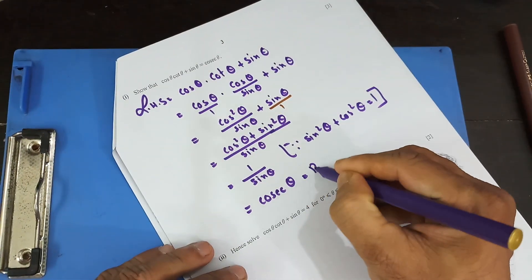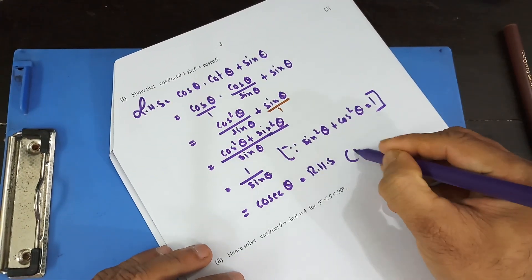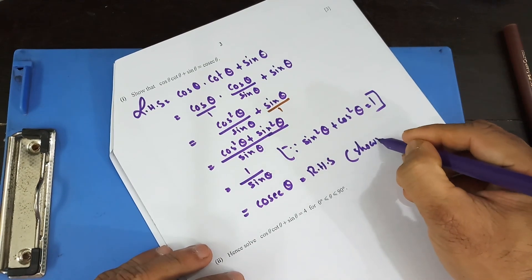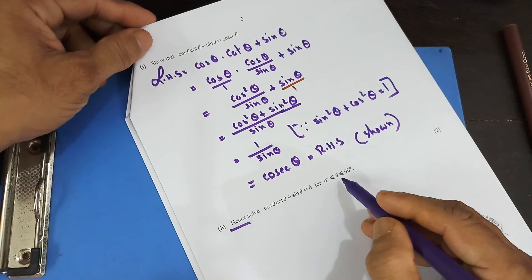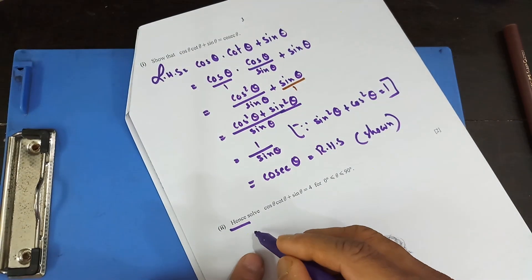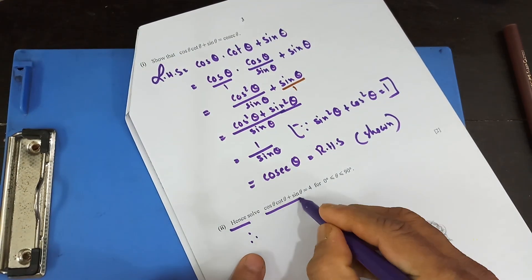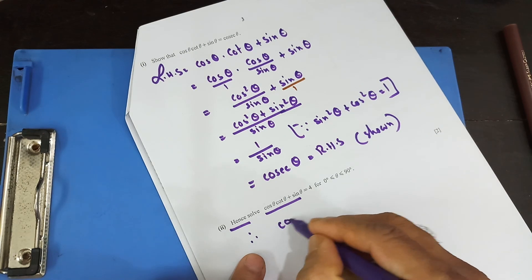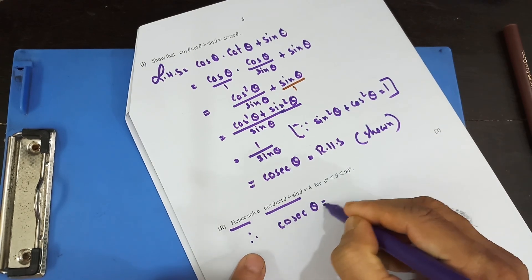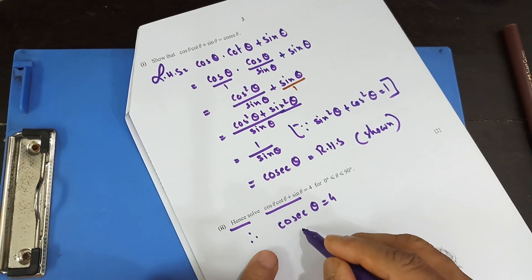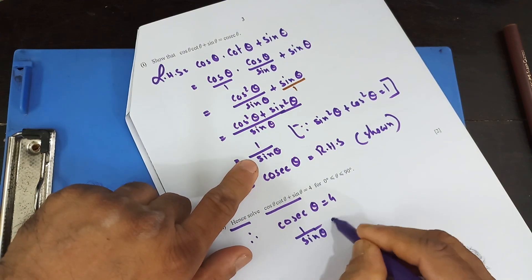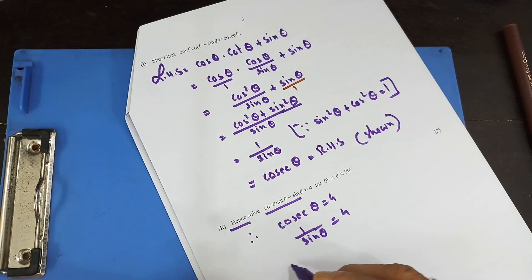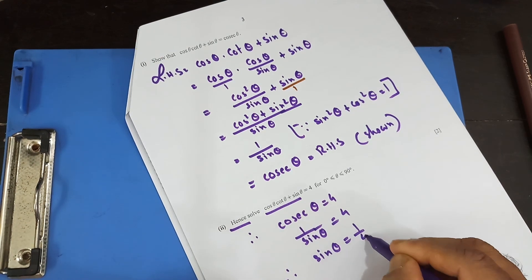Hence, using the result, solve cosec θ = 4. Since cosec θ = 1 / sin θ, we get sin θ = 1/4. The range is 0 to 90 degrees, so make sure your calculator mode is in degrees.